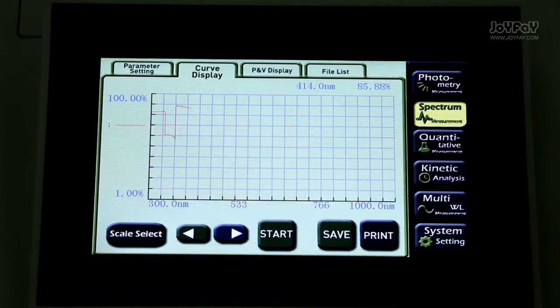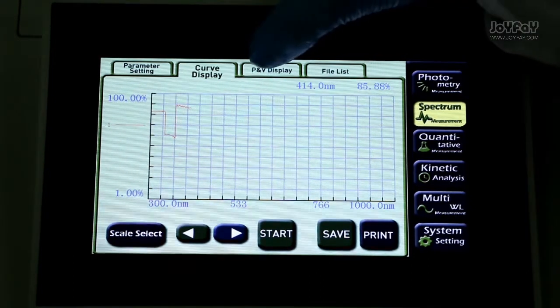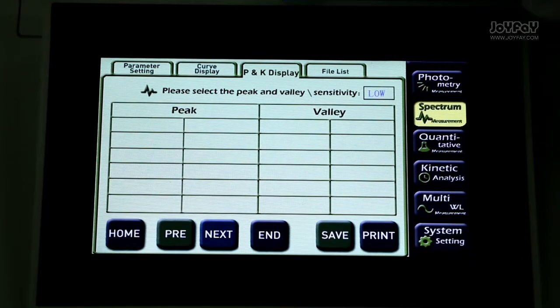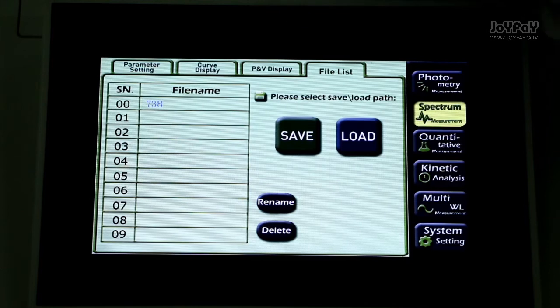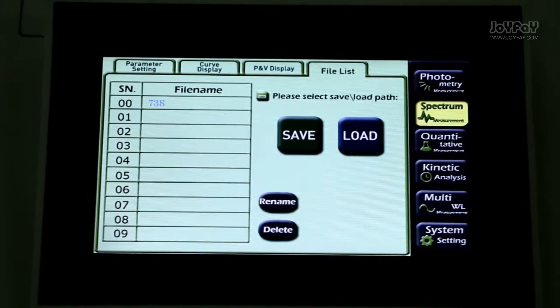And the final result can be seen in P and V display. All the results will be recorded in file list. Press print to print the result.